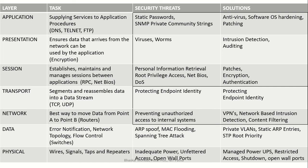The solution for the application layer is antivirus software, OS hardening, and patching. In the presentation layer, the main task is to ensure data arriving from the network can be used by applications — mainly through encryption. Security threats here are viruses and worms, and solutions are intrusion detection and auditing.